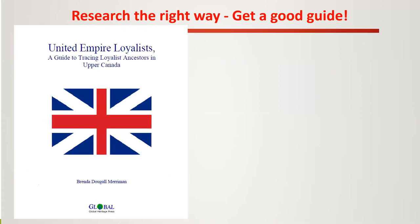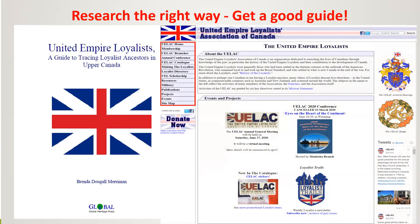My first tip is to research the right way — get a good guide. Research success means you'll need a general guide to assist in tracing your Loyalist ancestors. I like this book by Brenda Merriman, which provides a guide to necessary resources, background information, and the availability of records. The United Empire Loyalist Association of Canada's website has wonderful resources, including the Loyalist Directory, with lots of case documentation and an email contact for knowledgeable individuals for each particular Loyalist or family. Ancestry has also put together a research guide, and I've personally written an article on Ancestry CA's blog on some of the resources I used.